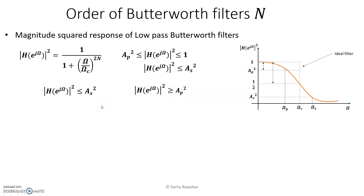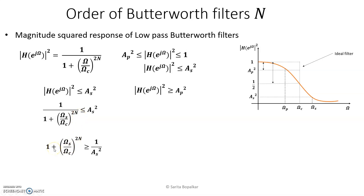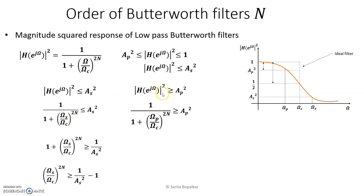Let's simplify these equations by substituting the value of the magnitude square response, 1 upon 1 plus (Ω/Ωc) raised to 2n. For the stop band specification, Ω becomes Ωs. Solving this: 1 plus (Ωs/Ωc) raised to 2n is greater than or equal to 1/as². Moving the 1 to the other side gives minus 1. Similarly, we apply the same steps to the pass band specification and simplify.